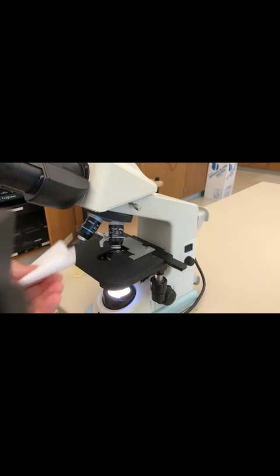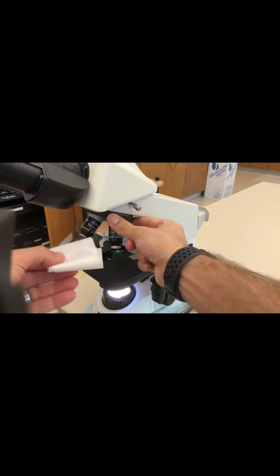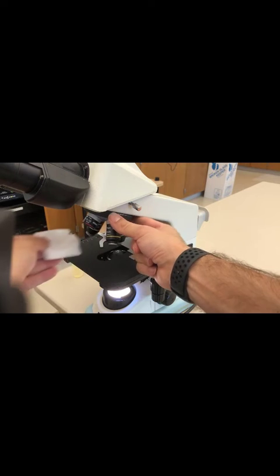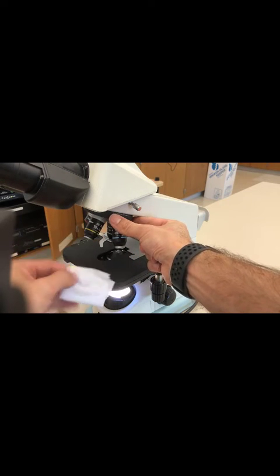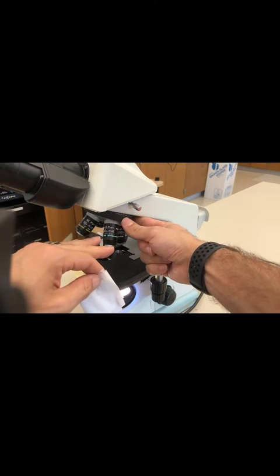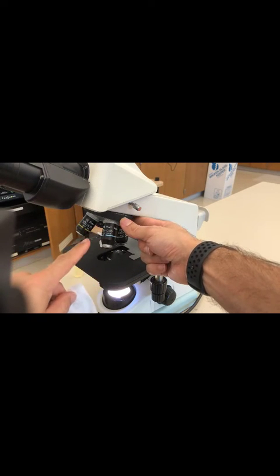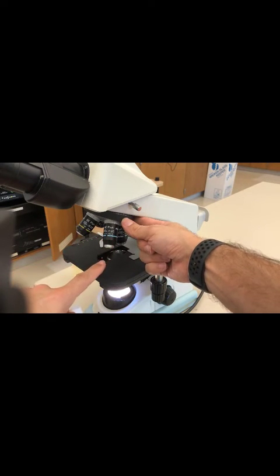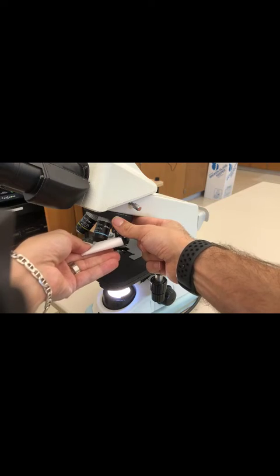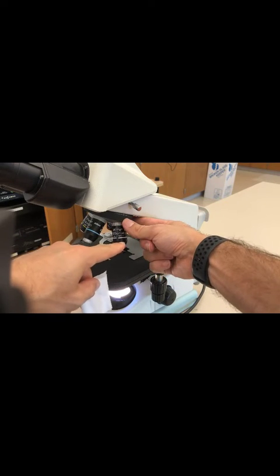What I like to do is start with the lowest objective lens, 4x. Never hurts to clean these. 10x. Next, the 40, which by the way, shouldn't encounter oil. Remember that? The 40x should never come into contact with oil, but you're going to wipe it anyway, just to be extra sure that it doesn't have any oil.